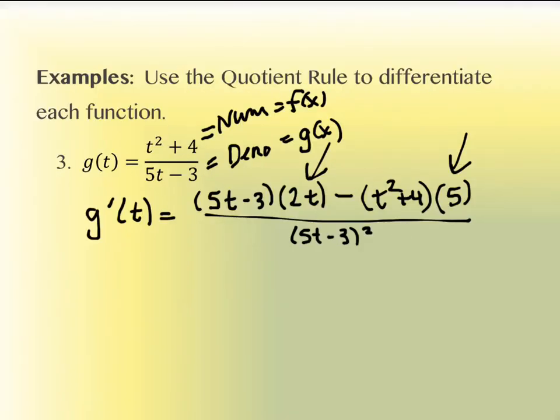We still have to simplify this. Note: if you were doing the quiz next Tuesday, you'd be done here — no simplifying required. You would stop right at that step on the quiz. But on your homework, we are going to simplify. There are purposes for needing the simplified version later. The calculus is done at this point — everything else is algebra. As it's been said before: you never really learn your algebra until you get to calculus.